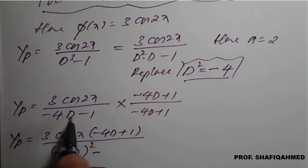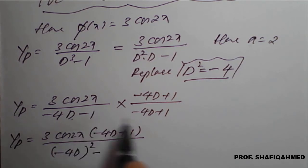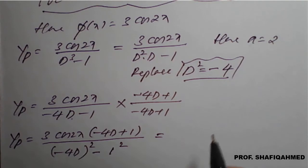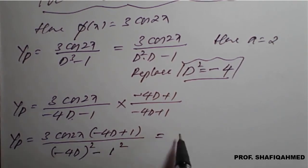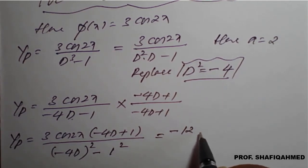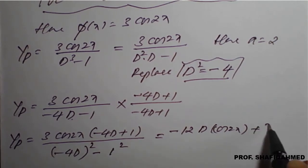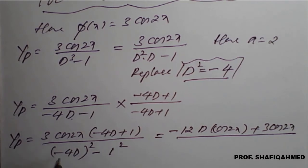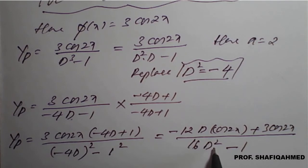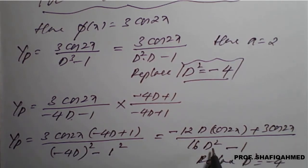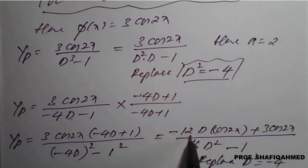Applying the a² - b² formula, the denominator becomes (-4d)² - 1². Expanding the numerator: 3·(-4d)·cos(2x) + 3cos(2x) = -12d(cos 2x) + 3cos(2x). The differentiation of cos(2x) is -2sin(2x). So the numerator becomes -12·(-2sin 2x) + 3cos(2x) = 24sin(2x) + 3cos(2x). In the denominator, replace d² by -4 again: 16·(-4) - 1.